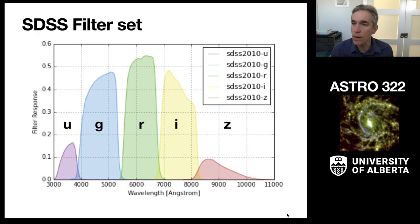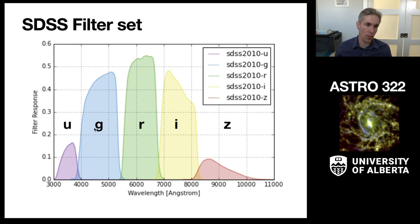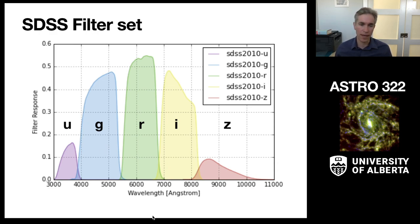I'll remind you of something we talked about back in chapter one: the filter set. The Sloan filter sets — UGRIZ — become quite important here. We're going to focus mostly on G and R, for the blue-green and red parts of the spectrum, and we'll look at the G minus R color, which tracks the optical color of a bunch of galaxies.